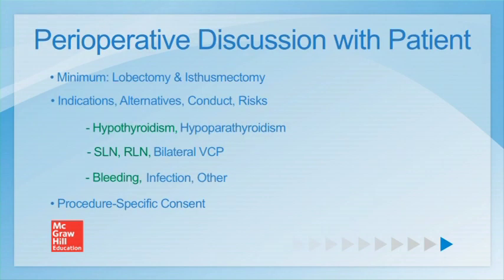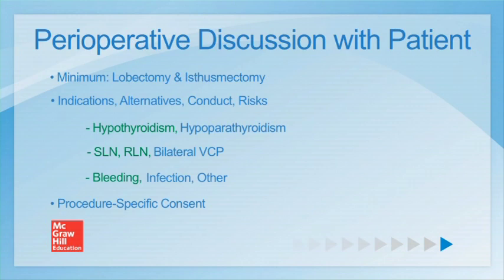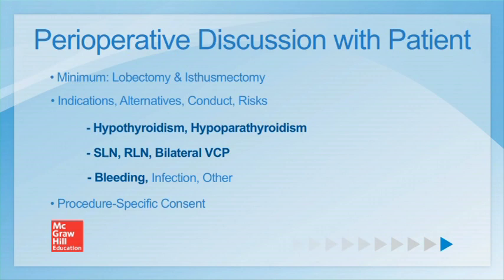Today, the minimum thyroid operation is complete lobectomy and isthmusectomy. The isthmus constitutes the medial margin of resection. Complete removal of all thyroid tissue on the operated side adheres to oncologic principles and reduces the likelihood of a risky and costly re-operation. In discussing surgical risks with the patient, the operating surgeon should cite both national rates and his or her own rates for each major complication. Seen here in green are the major risks of thyroid lobectomy; in blue are the major risks of total thyroidectomy.